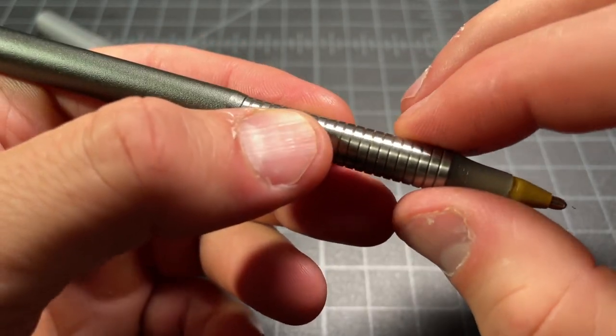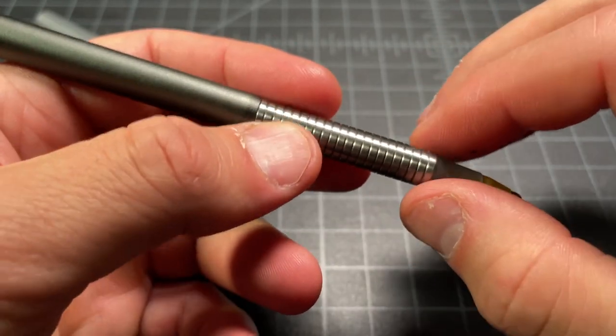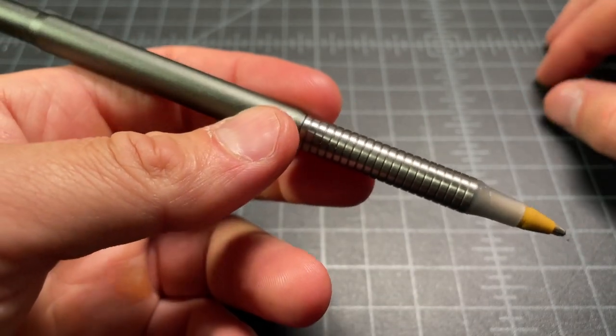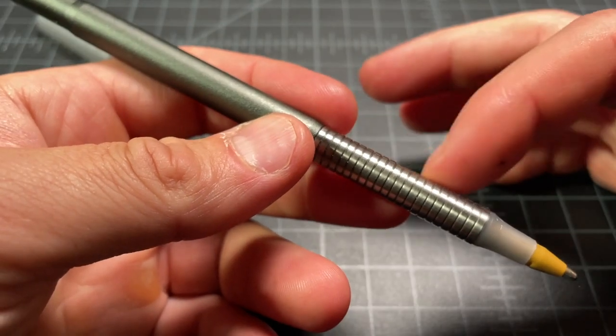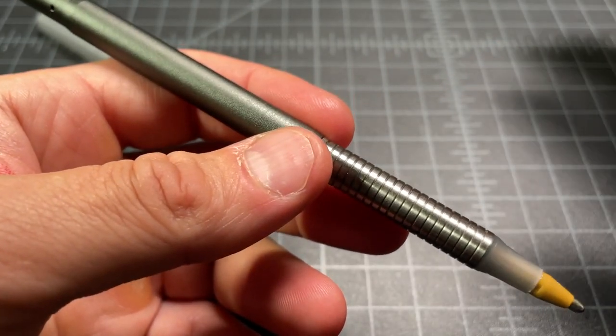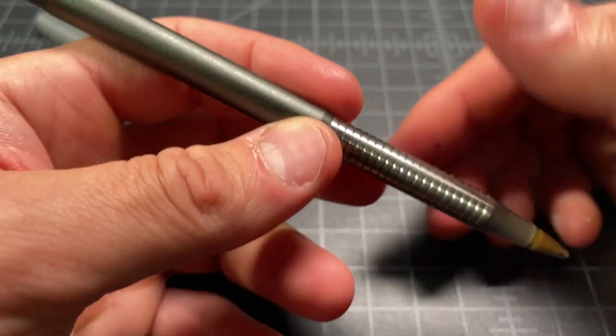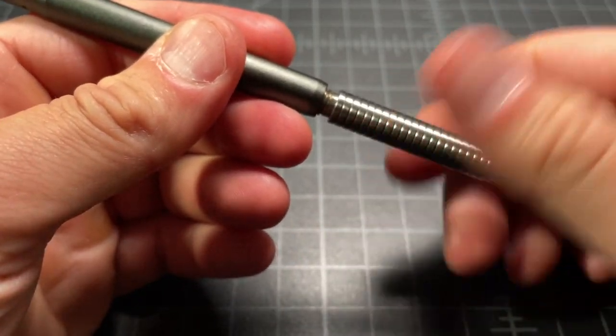The pen overall is 17 grams if you get the all aluminum version with the aluminum grip, and it's 15 grams with the titanium grip. This piece does unscrew.